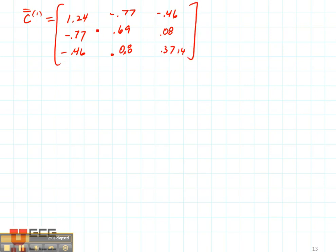Now this gives us an elemental coefficient matrix for node number 1, which is 1.24, minus 0.77, 0.690, 0.8, minus 0.46, 0.008, and this is 0.3714. All right, what do you observe about this? Notice that this matrix is symmetric about the diagonal. So this is the elemental coefficient matrix for node number 1.